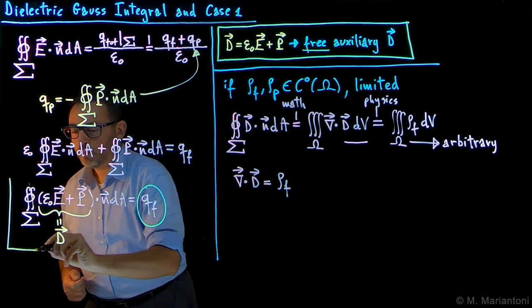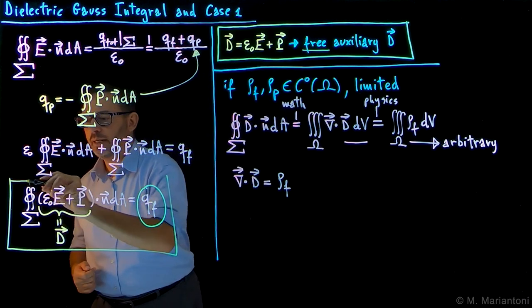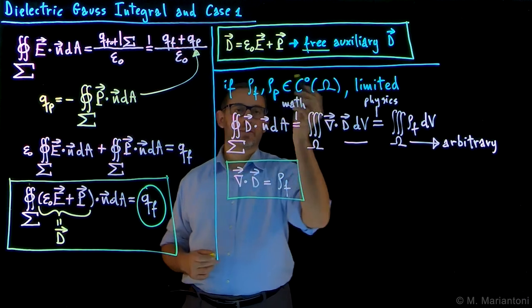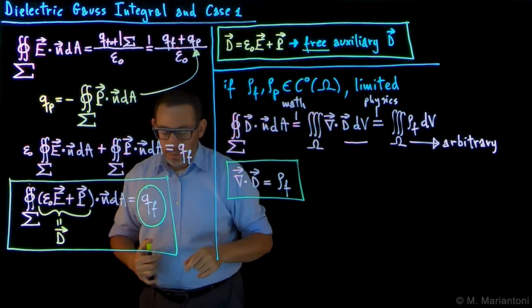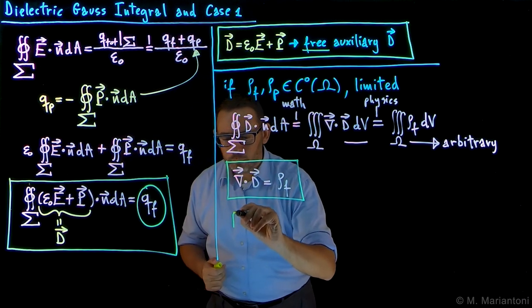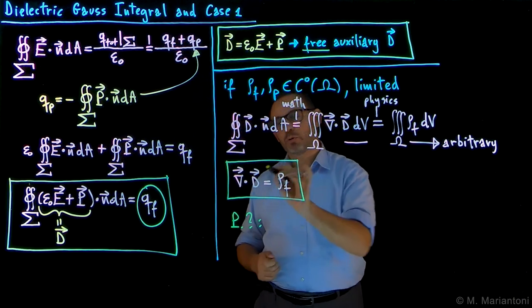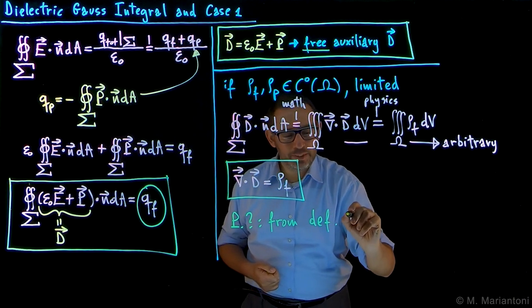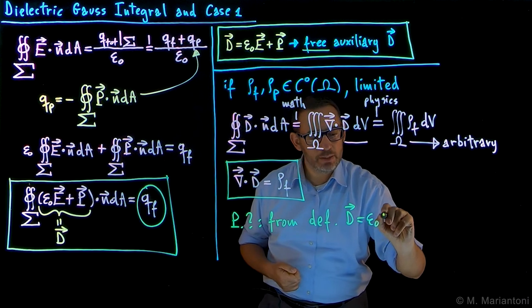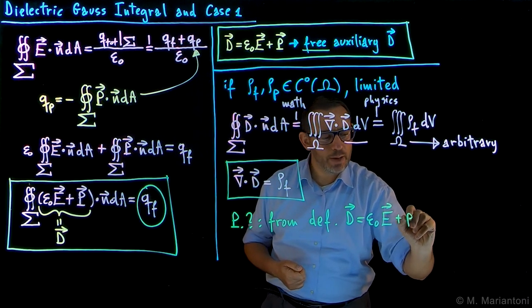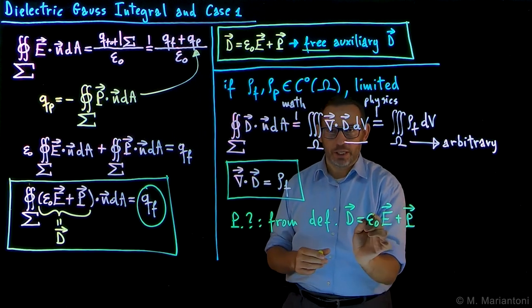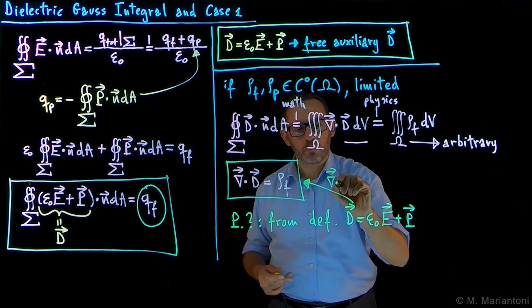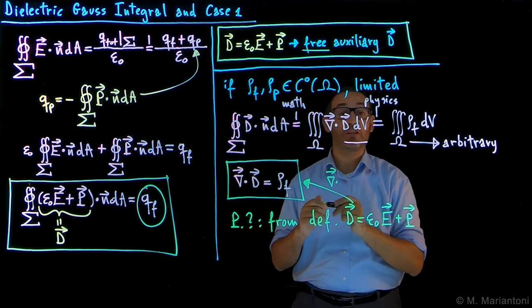So this is our integral form of Gauss's theorem for electric materials for D, and this is the local form — Case One, or differential form — which holds under the stated continuity and boundedness conditions. I also ask you in Piazza to prove this from the definition D = ε₀E + P: that is, compute the divergence of this quantity and recover the equation divergence of D = ρ_free.